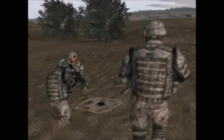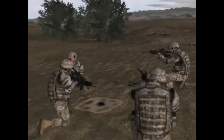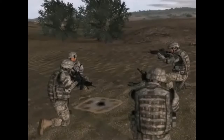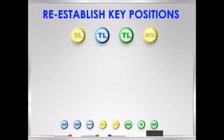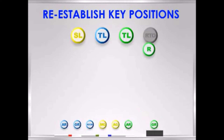Once each position is in place and all ACE reports have been gathered, each team leader will report back to the squad leader in the center of the perimeter to report the results. The ACE reports inform the squad leader if any key positions require filling. For example, if the RTO was wounded and unable to perform his duties, the squad leader could task one of his team leaders to provide a rifleman to replace the wounded RTO. Or if one of the team leaders was killed, the squad leader would appoint the next senior man in that team to replace the dead team leader.